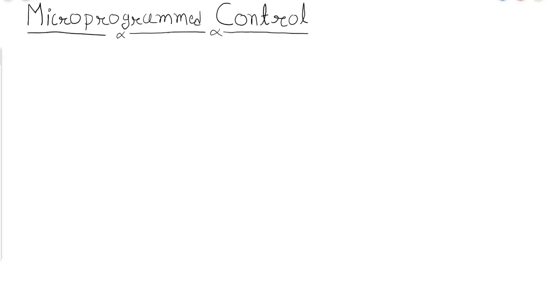Hello students, let us start our discussion. This unit is named Micro Program Control. We know that if we want to control various registers and perform various operations, we require one control unit which will help us to control the common bus architecture, arithmetic circuit, and memory. This control unit provides us the facility to manage all of these things — without it, we cannot utilize all the circuits we have learned.